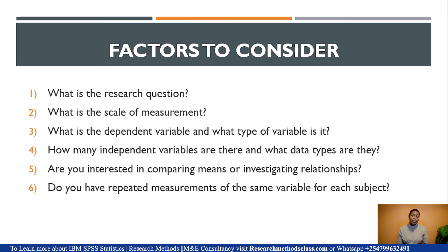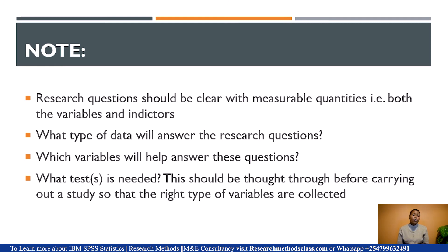The sixth factor is: do you have repeated measurements of the same variable for each subject? This is especially important when you are comparing means. Note that research questions should be clear with measurable quantities, which is why we normally draw a conceptual framework. A conceptual framework is another form of measurement — when you draw it to show how variables will be measured based on their indicators, you are measuring. You need very clear research questions, made more precise through a conceptual framework that shows how variables have been measured using indicators.